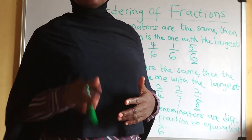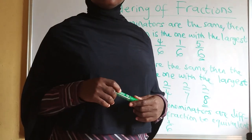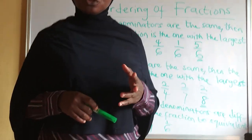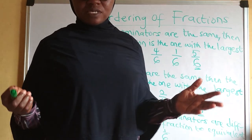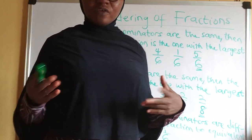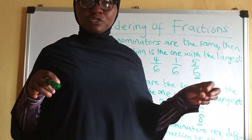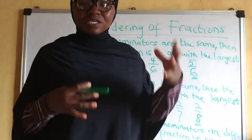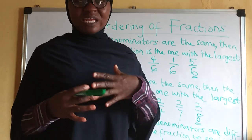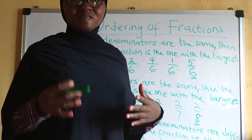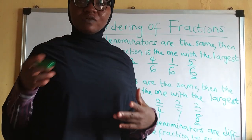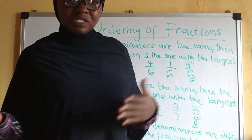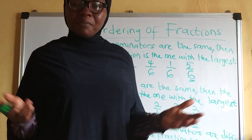In the last class we did equivalent fractions — we introduced you to what equivalent fractions are. Equivalent fractions are fractions that come in different numerators and denominators but are equal to one another. For instance, three over nine is the same thing as one over three, although they come in different numerators and denominators but are equal to each other.